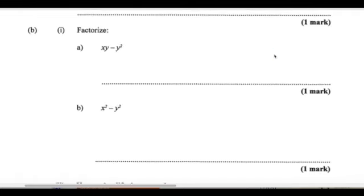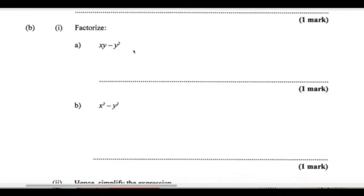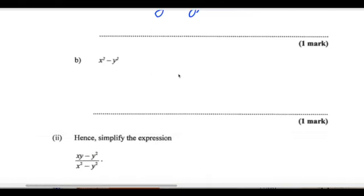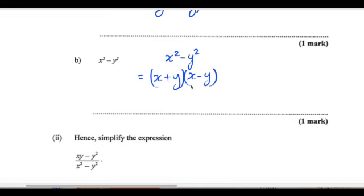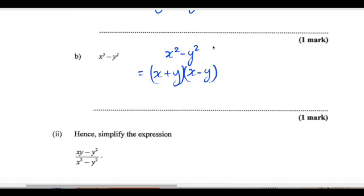Now we reach some factorizing. We could see we have one thing in common, which is y. So we pull out the y, and we'll get x minus y inside: y times x is xy, and y times y is y squared, with the minus in the middle. And for part b, we have a difference of two squares, so that will be equal to x plus y times x minus y.